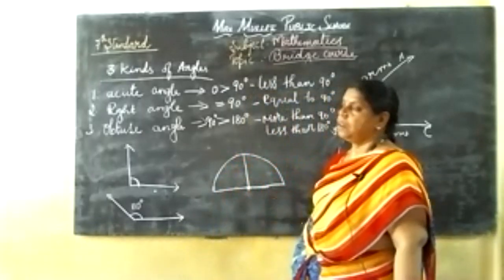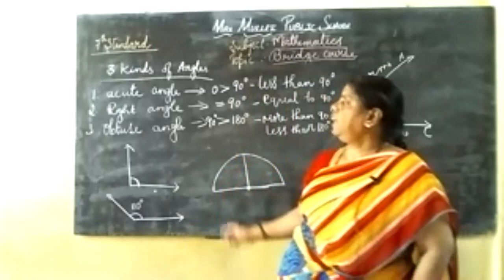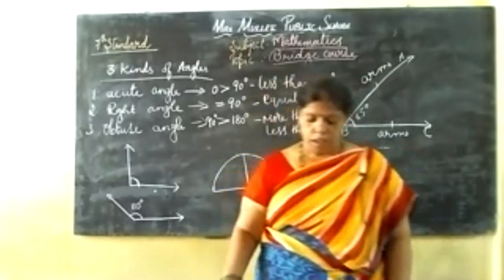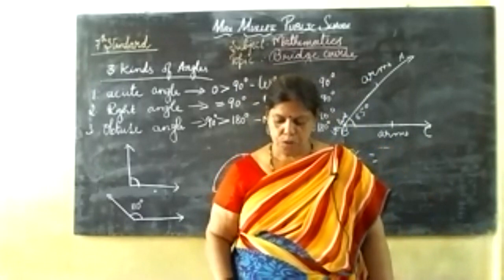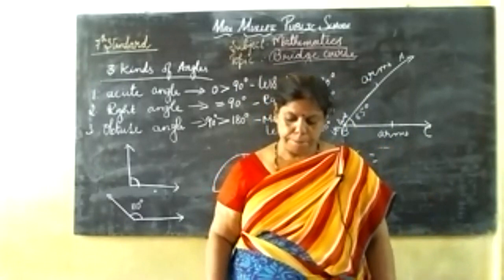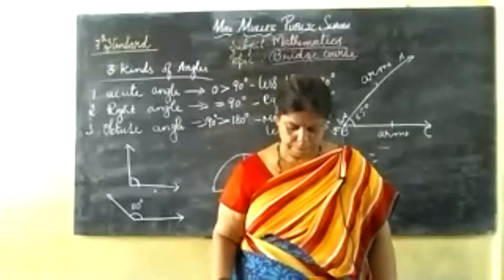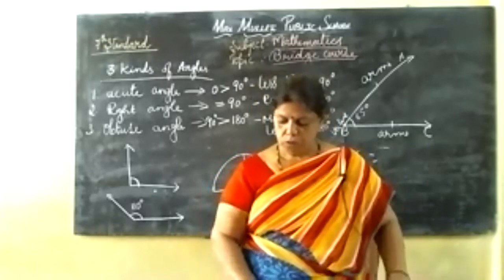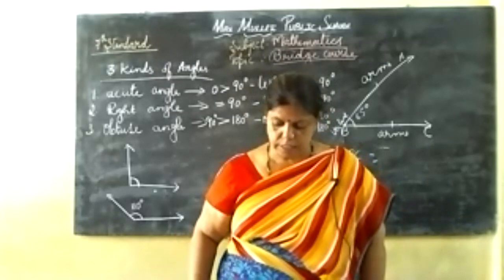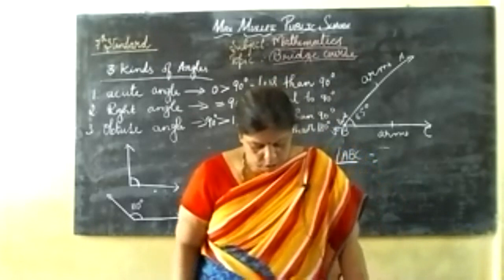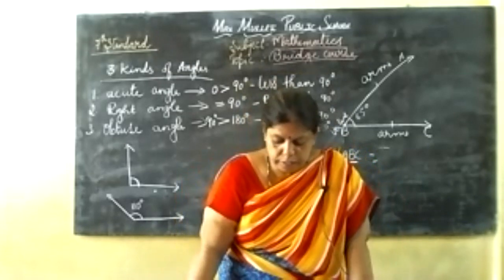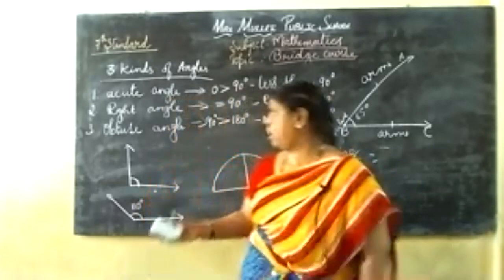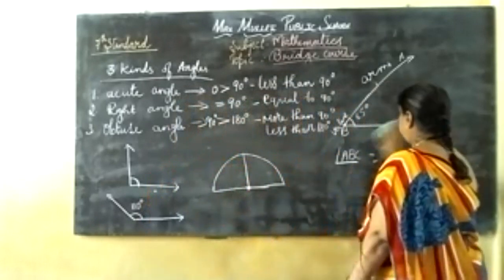We will cover angles in more detail in the next class in 7th standard. Now we will move to triangles and quadrilaterals. A quadrilateral means a four-sided closed figure. We will go over the triangle roughly and look at it in detail in other classes.